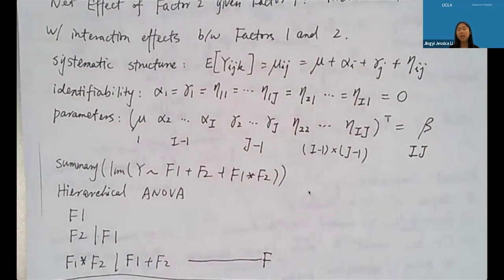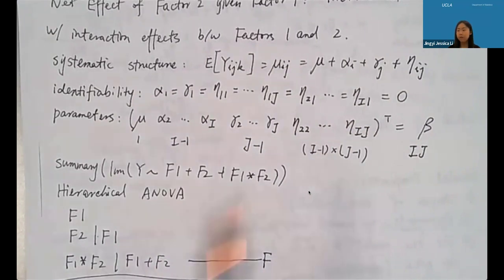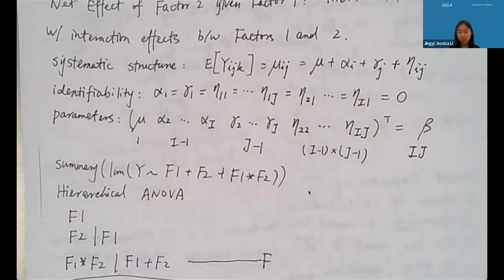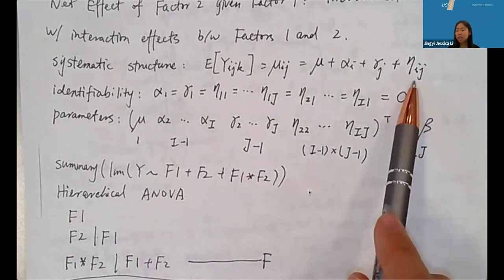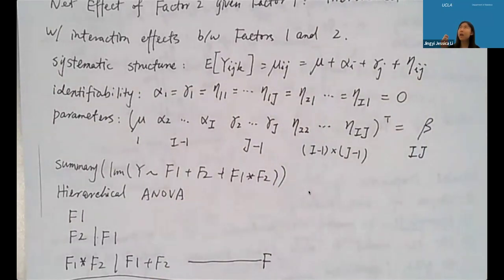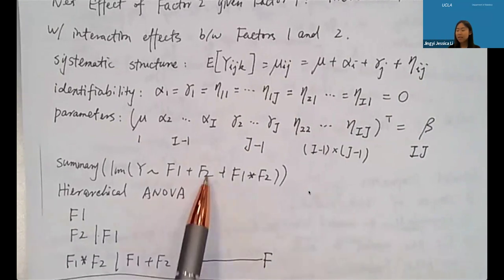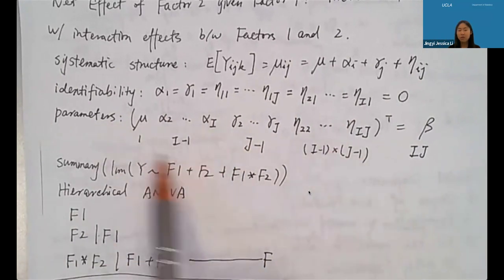For identifiability — meaning the parameters should have unique values given the same likelihood — we set alpha_1 and gamma_1 to zero, and all interaction terms where either factor is at level one are also set to zero. We then use multiple linear regression in matrix form. If factor one has I levels, we need I minus 1 dummy binary variables (one-hot encoding). If factor two has J levels, we need J minus 1 dummy variables, and for interactions we need (I-1)(J-1) columns in the design matrix.